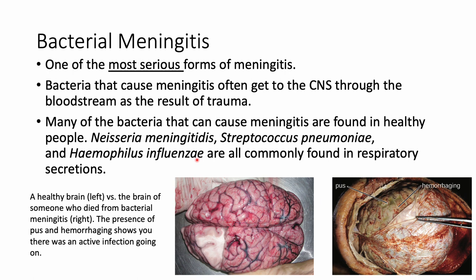Images of a healthy brain versus one from a patient who died from bacterial meningitis show hemorrhaging and pus formation. The pus results from bacteria with virulence factors like leukocidins that kill white blood cells, allowing the bacteria to maintain an active infection in that tissue.